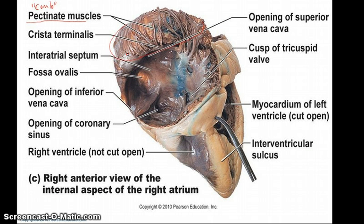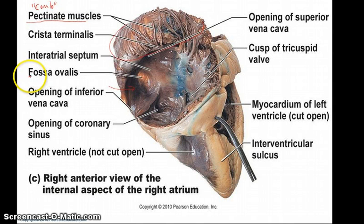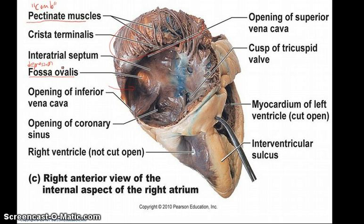Pectinate muscles can be found in both atria. You'll notice that other parts of the atria have a very smooth lining. Another feature you'll see is the fossa ovalis. 'Fossa' means depression — a shallow depression — and 'ovalis' means oval. So fossa ovalis means a shallow, oval-shaped depression.